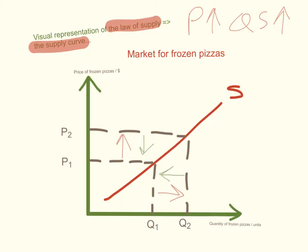Here we're looking at the market for frozen pizzas. When the price of frozen pizzas rises, current producers will increase the quantity supplied so that they can make more profit. Also, this might encourage other producers to enter and sell frozen pizzas as well, and this explains why the supply curve is positively sloped.